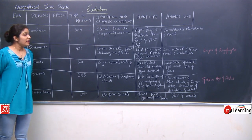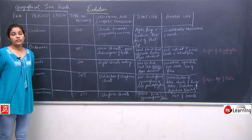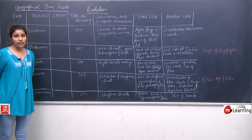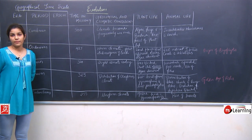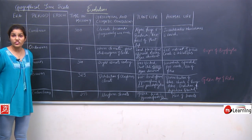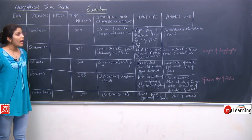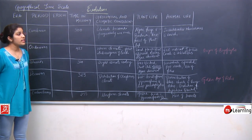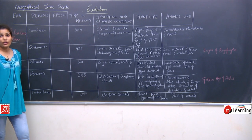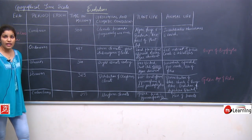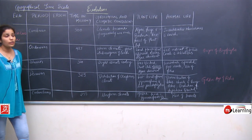In the Ordovician period, land plants first appeared. The first land plant was bryophytes, which originated in the Ordovician period of the Paleozoic era. This is an important fact — when asked when bryophytes originated, the answer is the Ordovician period of the Paleozoic era.